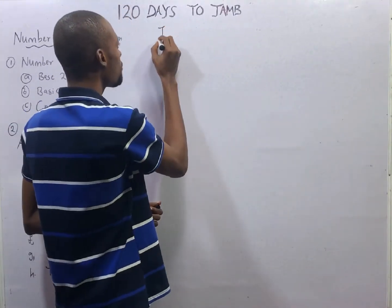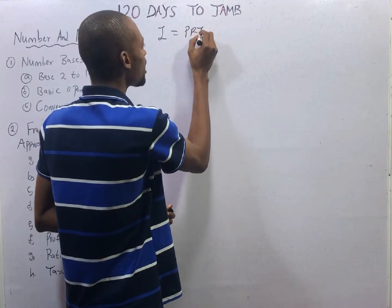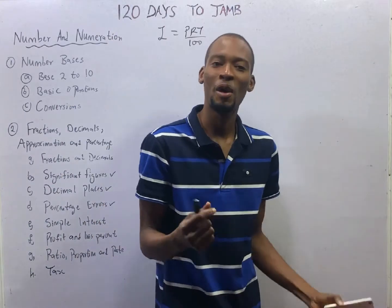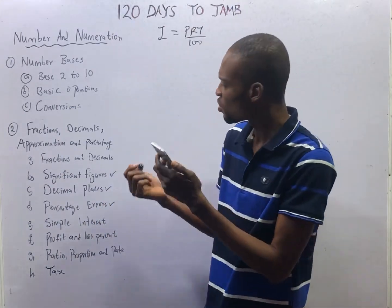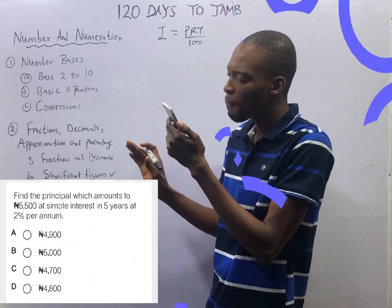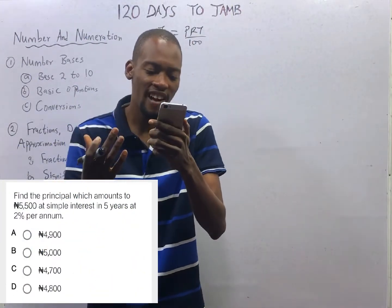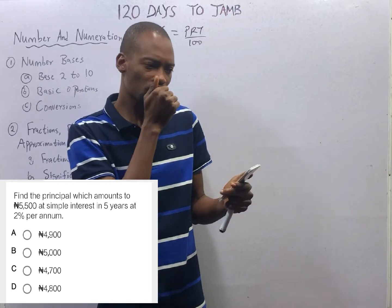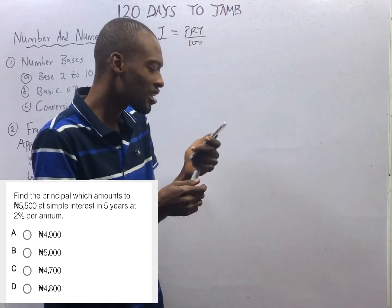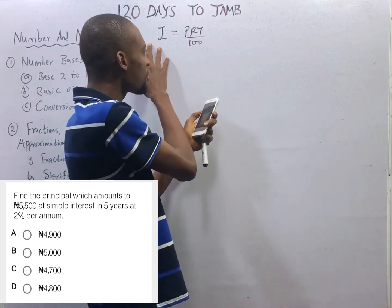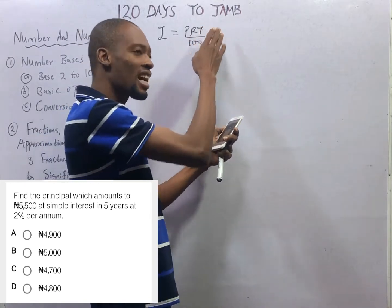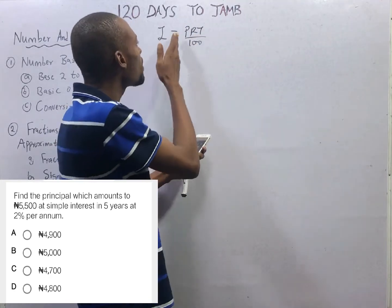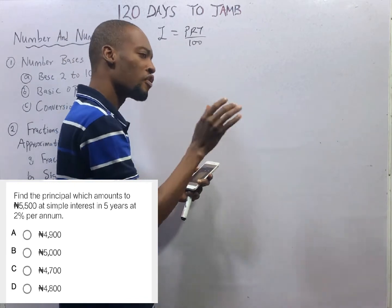We know that simple interest is principal times rate times time over 100. With this knowledge, and the knowledge of the previous class, if I raise this question to you — find the principal which amounts to N5,500 as simple interest in 5 years at 2% per annum — you will be tempted to take N5,500 as the interest, then 5 years as the time, which is correct, then rate 2%, which is correct, and simply make principal the subject of the formula.